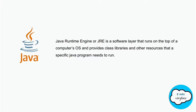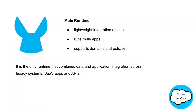We can take an example of JRE to understand runtime engines. JRE is a software layer that runs on top of a computer operating system. It provides class libraries and other resources that a specific Java program needs to run. After understanding all these terminologies, we can easily interpret what New Runtime is.